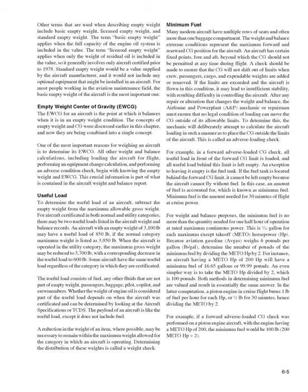Minimum fuel is the amount needed for 30 minutes of flight at cruise power. For weight and balance purposes, minimum fuel is no more than the quantity needed for one half hour of operation at rated maximum continuous power—one-twelfth gallon for each maximum except takeoff (METO) horsepower. Because aviation gasoline (avgas) weighs 6 pounds per gallon, determine the pounds of minimum fuel by dividing the METO HP by 2. For example, an aircraft with a METO HP of 200 will have a minimum fuel of 100 pounds (200 ÷ 2).